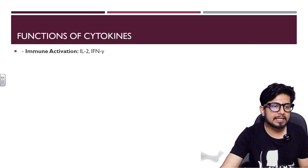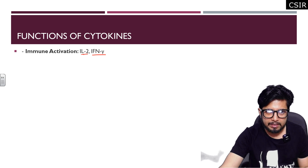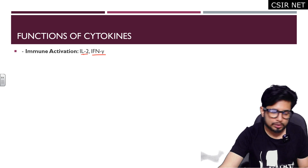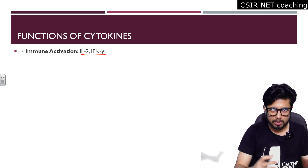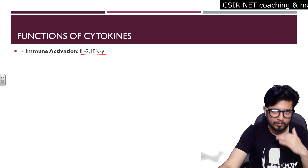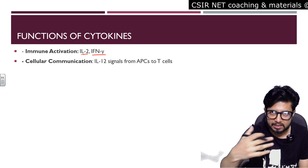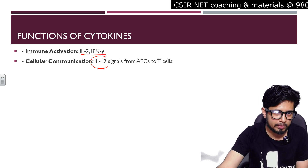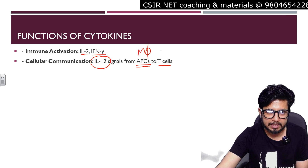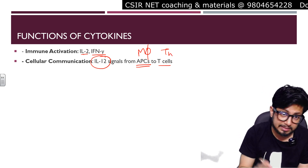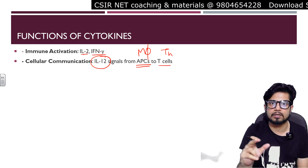The functions of cytokines: first is immune activation. Interleukin-2 and interferon-gamma are important cytokines that cause immune activation and help with crosstalk between the innate and adaptive parts of immunity. Second is cellular communication — cytokines act as chemical messengers between cells. For example, interleukin-12 acts as a signaling molecule between antigen-presenting cells and T cells: a macrophage presenting antigen to a naive T cell uses IL-12 as the intercellular communication device.